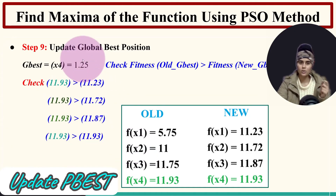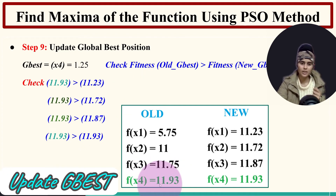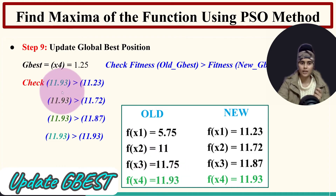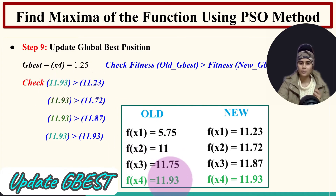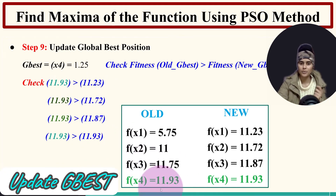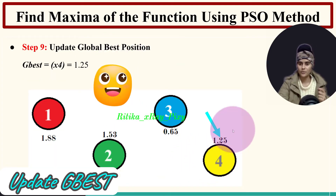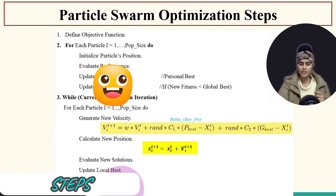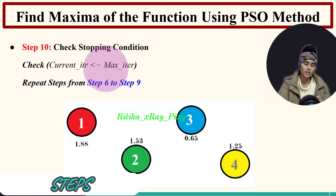Now we update the global best. In the previous iteration the best solution was 11.93. We compare this with the new solutions: 11.23 (particle 1) - old is better; 11.72 (particle 2) - old is better; 11.83 (particle 3) - old is better. So the global best remains particle 4 with position 1.25 and fitness 11.93. We check the stopping condition and proceed to the second iteration, repeating steps 6 to 9.